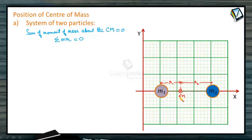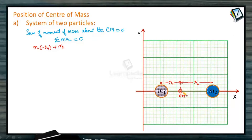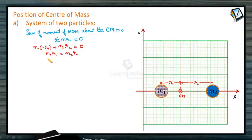For a system of two particles, if I fix the coordinate system at the CM point, mass M1 is at a distance R1 in the opposite direction, so it contributes minus R1. M2 is at a distance R2 on the other side. So: −M1·R1 + M2·R2 = 0, which means M1·R1 = M2·R2.